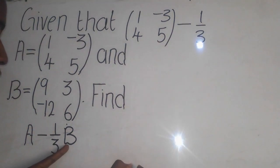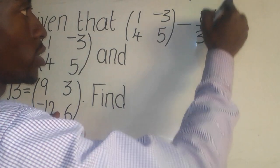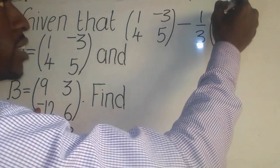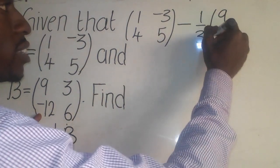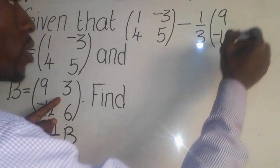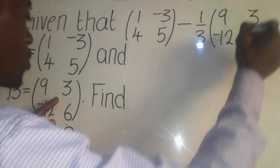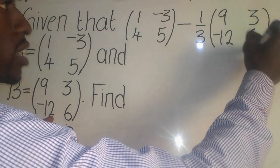So we have to get down the matrix for B, which is this one. So we do like this. So we have 9 there, we have negative 4 there, we have 3 there, we have 6 there, like this.